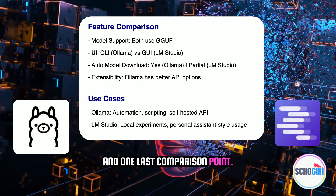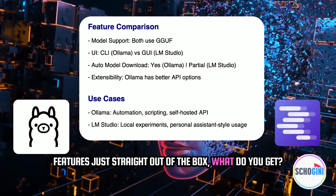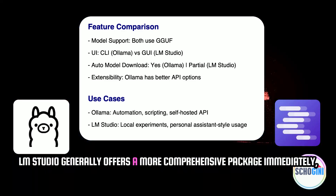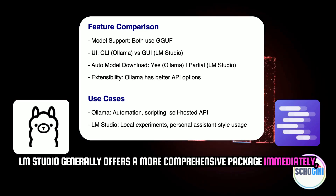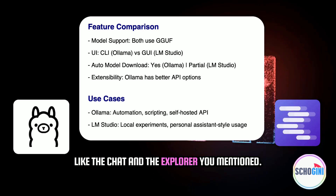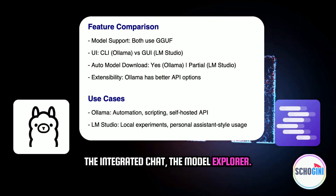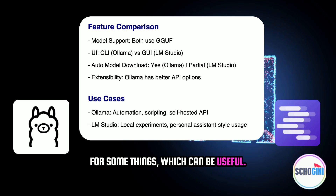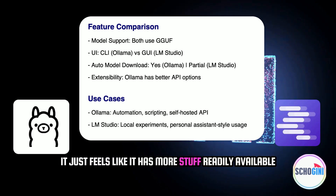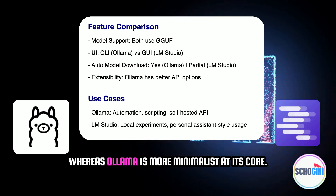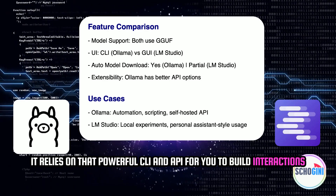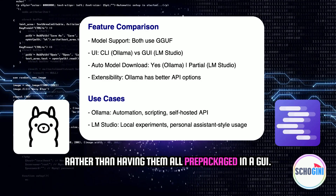One last comparison point: features straight out of the box. In terms of built-in bells and whistles, LM Studio generally offers a more comprehensive package immediately — the integrated chat, the model Explorer, and compatibility with the OpenAI API format for some things. It just has more stuff readily available right after you install it. Whereas Ollama is more minimalist at its core, relying on its powerful CLI and API for you to build interactions rather than having them all pre-packaged in a GUI.